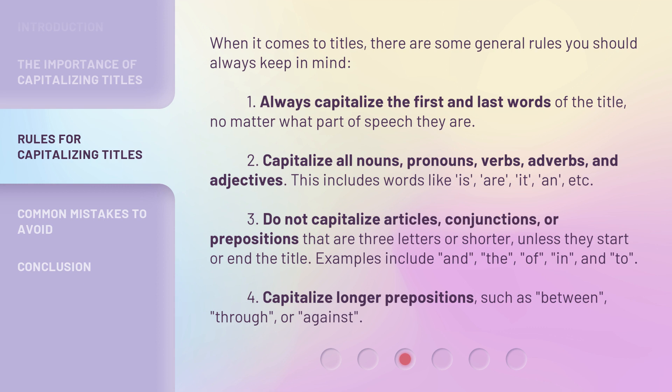Rule 3: Do not capitalize articles, conjunctions, or prepositions that are three letters or shorter, unless they start or end the title. Examples include: "and," "the," "of," "in," and "to." Rule 4: Capitalize longer prepositions, such as "between," "through," or "against."